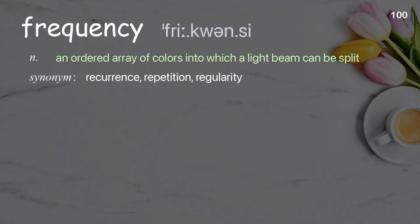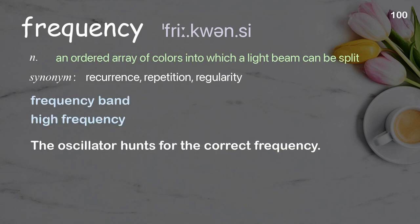Frequency: a measure of how often something occurs. Examples: frequency band; high frequency. The oscillator hunts for the correct frequency.